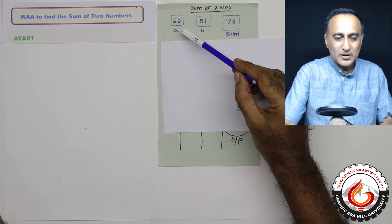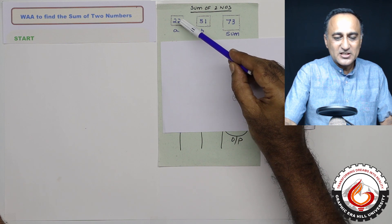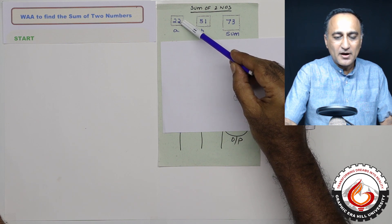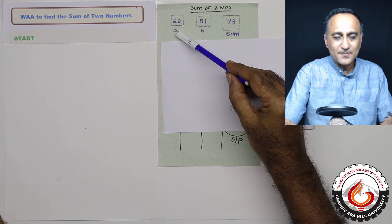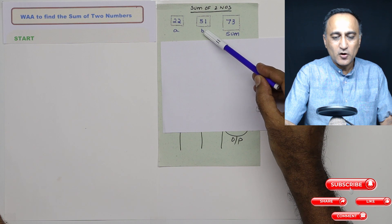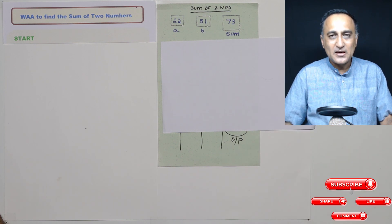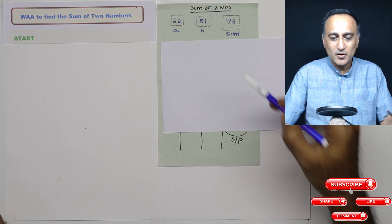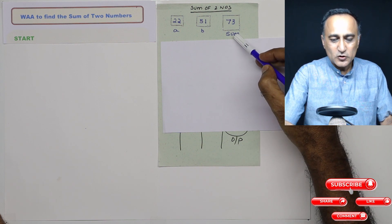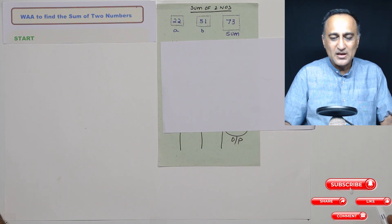So the first thing you need to do is, if you have to find the sum of two numbers, you need to identify two memory locations to read and store those numbers in those particular locations. For example, I am reading the first number, let's say it's 22 into a memory location which I call as A. I am reading the second number, which is 51 into a memory location which I call it B. And the result of A plus B, I am going to store it in a third memory location called sum. So if you see here, sum has 22 plus 51, which happens to be 73.